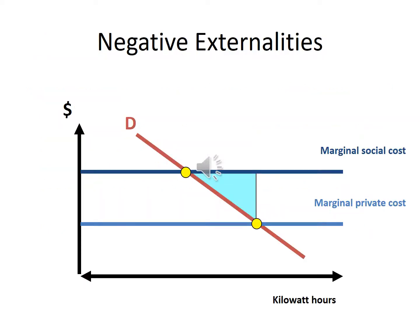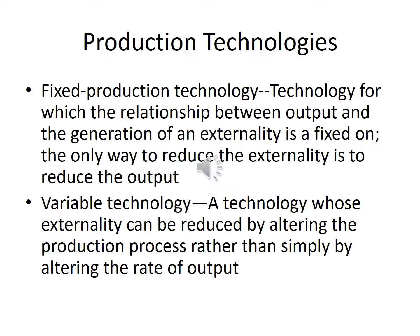The figure shows negative externalities. Production Technologies. Fixed Production Technology: technology for which the relationship between output and the generation of an externality is fixed — the only way to reduce the externality is to reduce the output. Variable Technology: a technology whose externality can be reduced by altering the production process rather than simply by altering the rate of output.